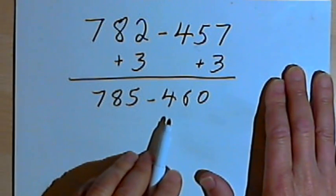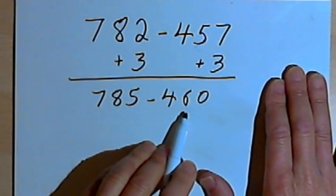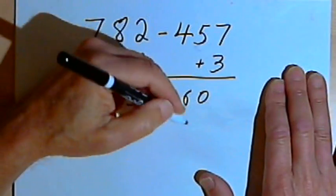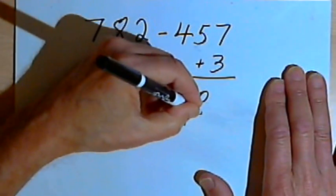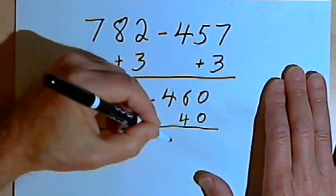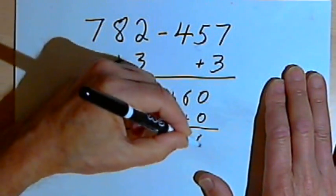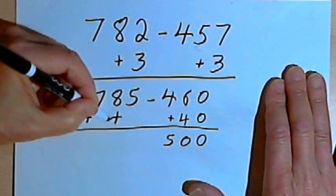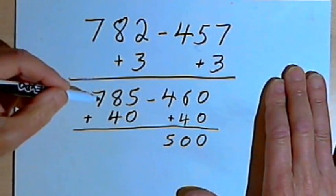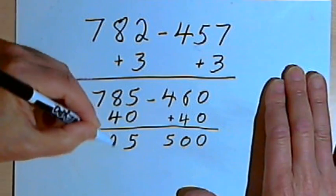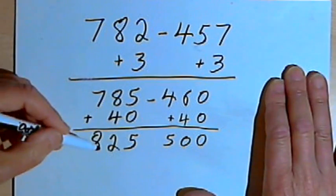But I could make it even easier if I had a 0 in the tens column. So since I have 460, if I added 40 to this number, I would end up with 500. That's a nice number to subtract. Which means I have to add 40 to the other number as well, to the 785. So I'll add 40 to that, and I'm going to get 825.